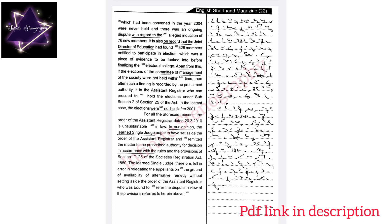1860. The learned single judge, therefore, fell in error in relegating the appellants on the ground of availability of alternative remedy without setting aside the order of the assistant registrar who was bound to refer the dispute in view of the provisions referred to hereinabove.